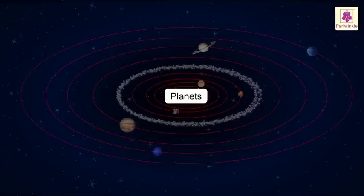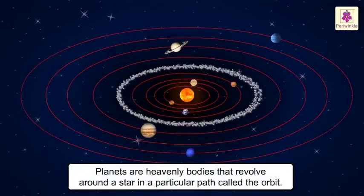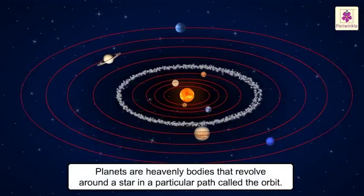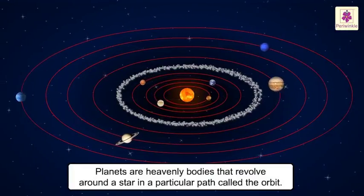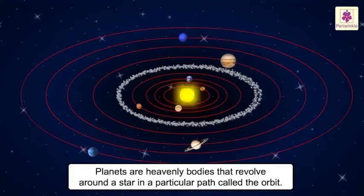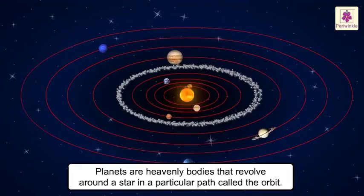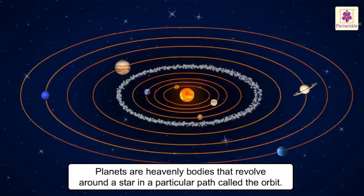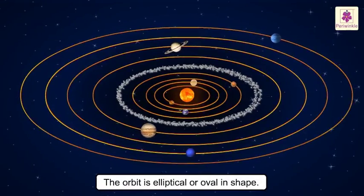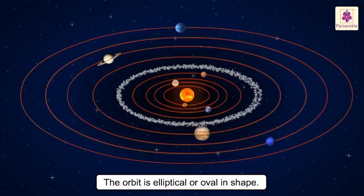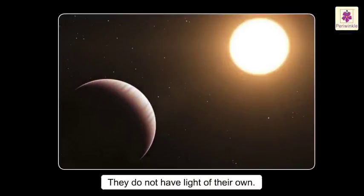Planets. Planets are heavenly bodies that revolve around a star, for example the Sun, in their own particular path called the orbit. The orbit is elliptical or oval in shape. They do not have light of their own.